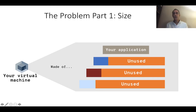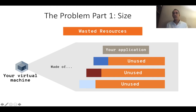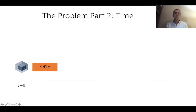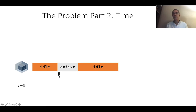All of those orange parts are wasted resources that are costing you money. The second part of the problem has to do with time. When you deploy your virtual machine, it immediately starts running even though it may be idle. At some point in time, some client request traffic comes in and it becomes active. Once it's done dealing with those active requests, it goes idle again, and then the cycle repeats.